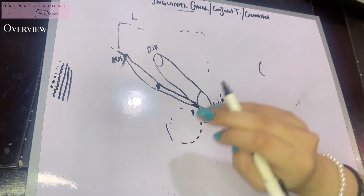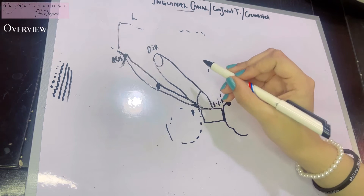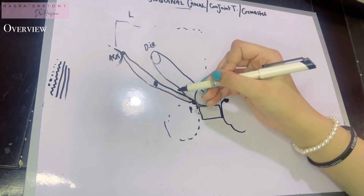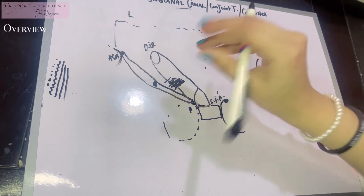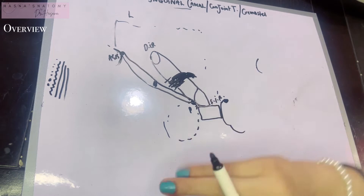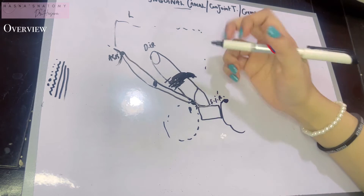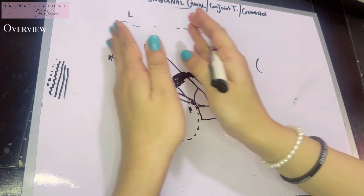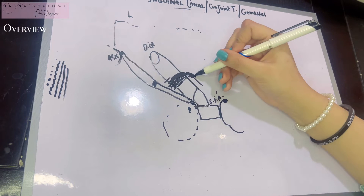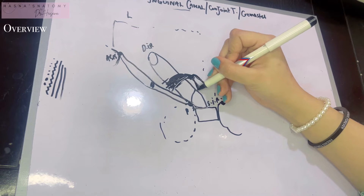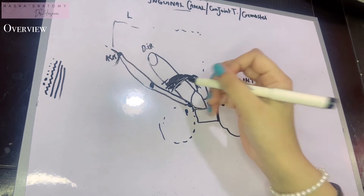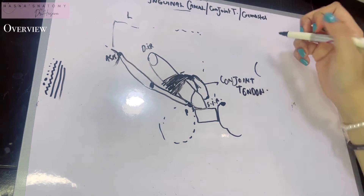The lowest fibers of the internal oblique and the transversus abdominis form the conjoint tendon. Coming to the lowest part of the abdominal wall, the internal oblique and transversus abdominis merge and arch over the inguinal canal. Where the muscle fibers finish, the aponeurosis of the internal oblique and transversus abdominis begins — at the linea semilunaris. These aponeurotic fibers are known as the conjoint tendon.